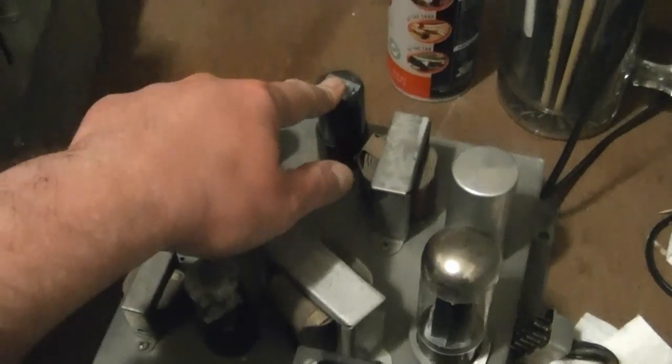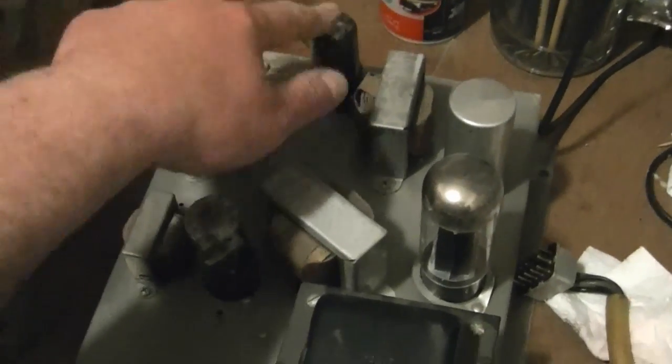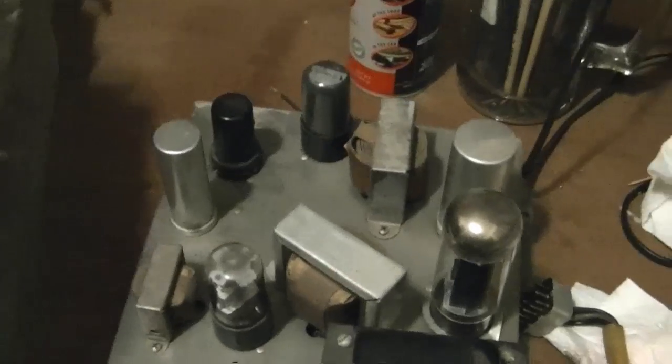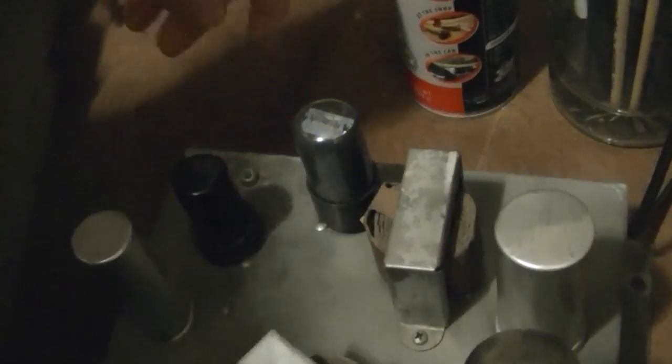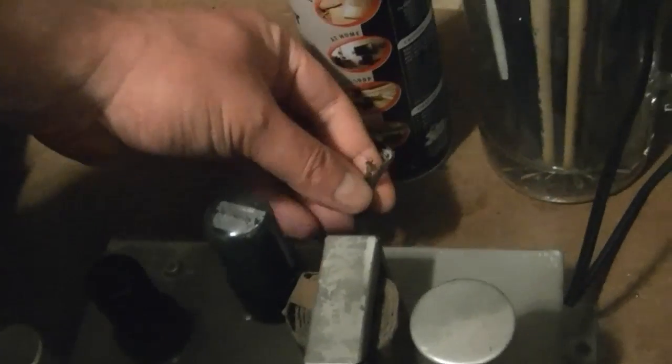6SQ7 followed by a 6V6. I already tested these tubes, they test like new. So I think I can safely eliminate them. It's the audio output transformer I'm pretty sure and these two wires go to the speaker.